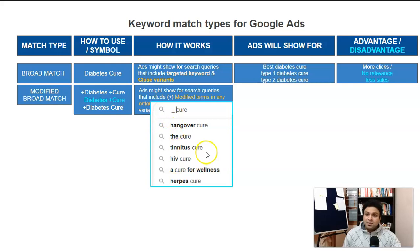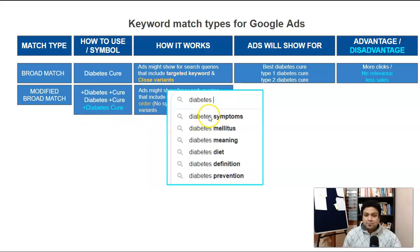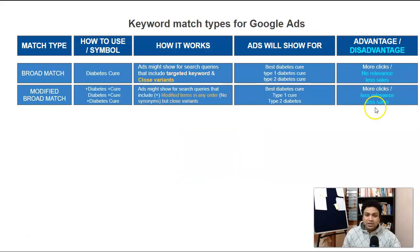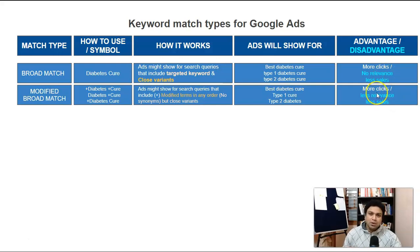Similarly, if we add plus before 'diabetes' but not 'cure,' our ad will trigger for all diabetes-related queries — 'diabetes symptoms,' 'mellitus,' 'meaning,' 'diet,' 'definition,' 'prevention' — but 'cure' won't be required. The advantage of modified broad match is more clicks with some relevance, unlike broad match which has almost no relevance at all. But there's still less relevance and less sales compared to tighter match types.